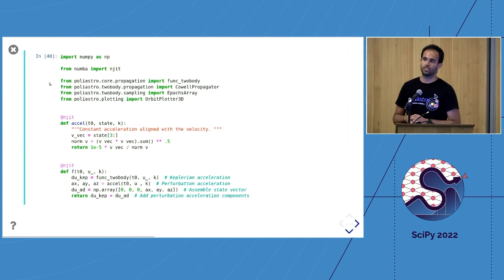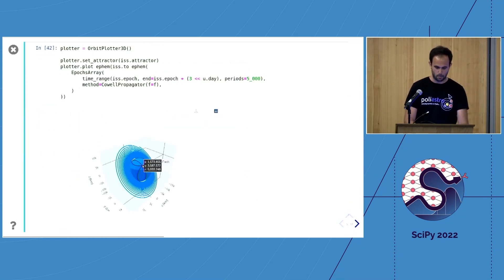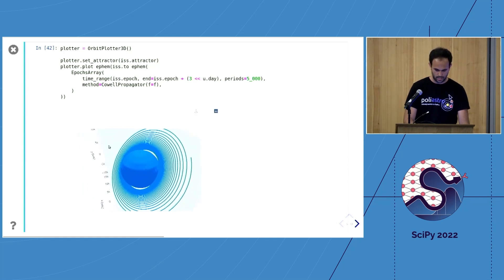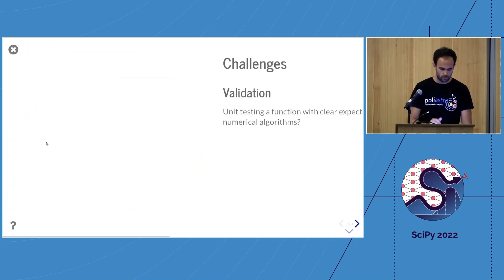You can also describe artificial perturbations or thrust. For example, how would be the orbit of the International Space Station if you apply some constant acceleration of 10^-5 meters per square second along the direction of the velocity? You define this acceleration that is jitted with Numba, add that to the two-body equation, then plot it and get this marvelous spiral orbit that is the trajectory the ISS would follow.